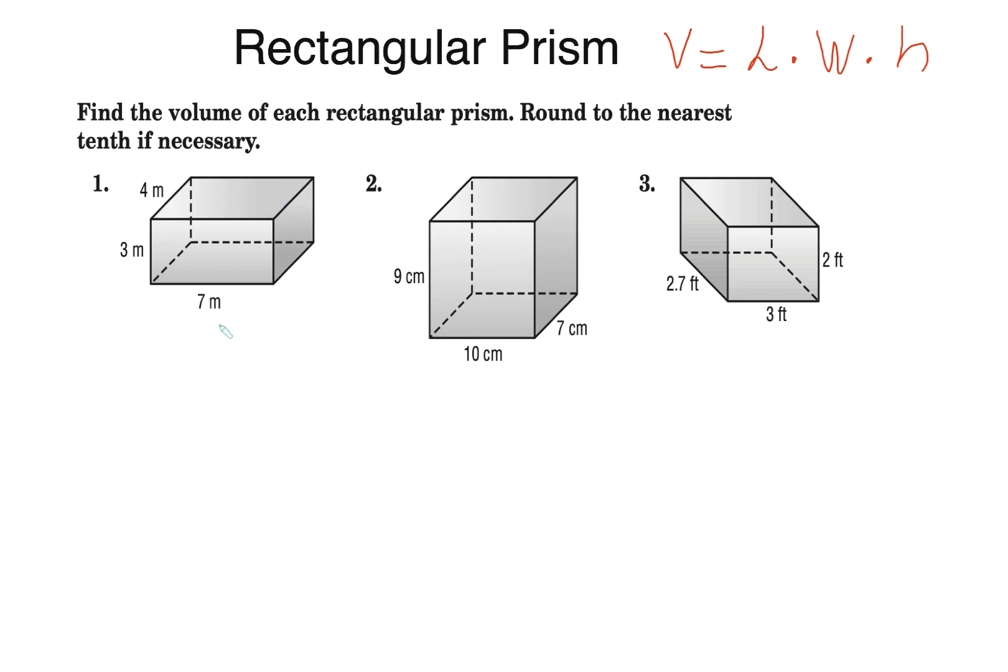If you look at any formula for volume it always has the height in it. So it's just the area times the height. Here's my formula. I'm looking at number one. This is my rectangular prism.